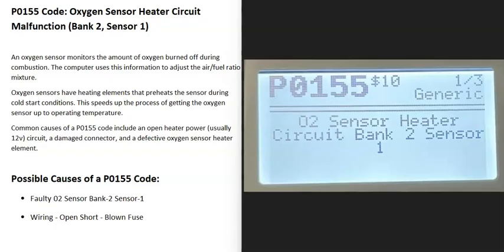Today I'm talking about a P0155 code, what it is and how you go about fixing it. A P0155 code is an oxygen sensor heater circuit malfunction, bank two sensor one.